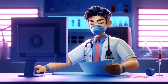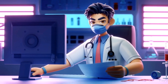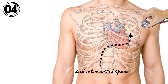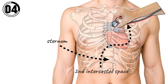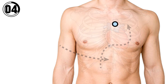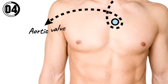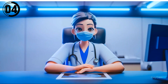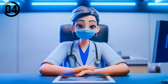Now let's hear the aortic valve with the fourth auscultation point. The stethoscope should be placed at the second intercostal space and the right border of the sternum. This auscultation point is best to hear the aortic valve and murmurs like aortic stenosis. Let's hear the aortic stenosis loud and clear.